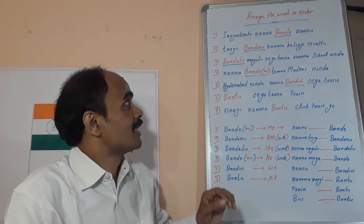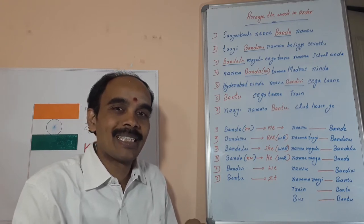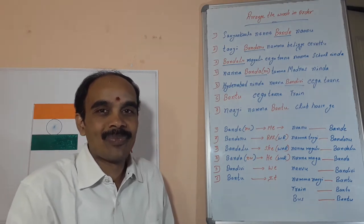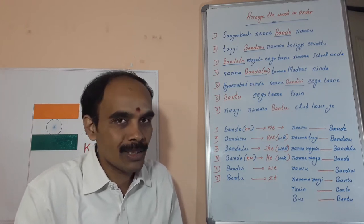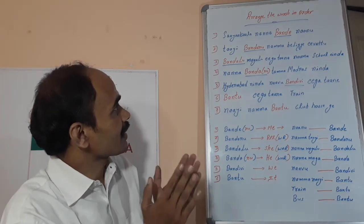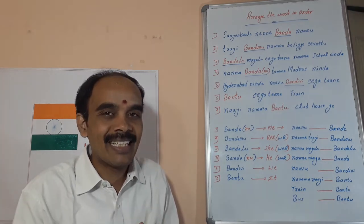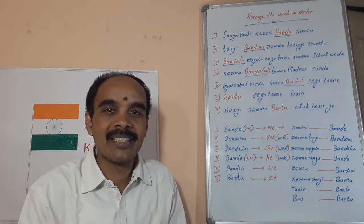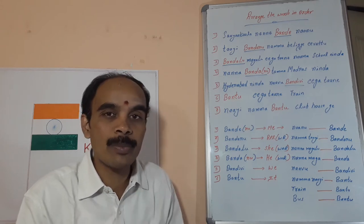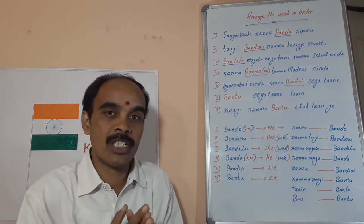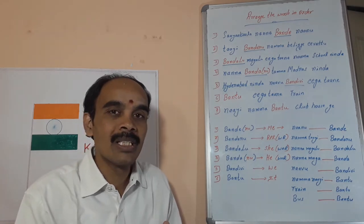The first sentence is: 'Sayankala nenne bandhe nanu' — do you have an idea how to make this sentence? The answer is: 'nanu nenne sayankala bandhe.' That means 'I came yesterday evening.' This 'bandhe' is used for me — the first person. Both females and males can use 'bandhe' with 'nanu.'